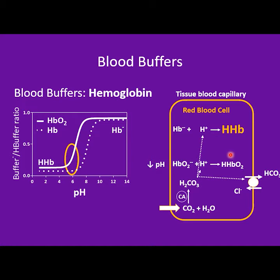Another consequence is that oxyhemoglobin in the acidic form loses oxygen more easily. Oxygen leaves hemoglobin and exits the cell as a gas, delivering oxygen to the tissues.